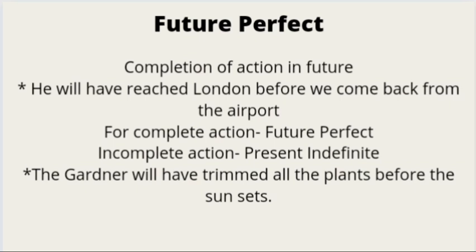Our next tense is future perfect. This tense is used for the completion of an action in the future — for example, he will have reached London before we come back from the airport. When there are two future actions, future perfect is used for the complete action and present indefinite for the incomplete action — for example, the gardener will have trimmed all the plants before the sun sets. Here, 'will have trimmed' is the complete action using future perfect, and 'before the sun sets' is the incomplete action using present indefinite.